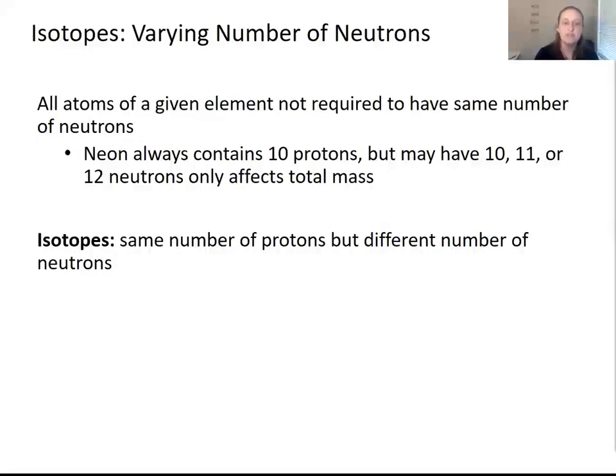Isotopes result when the number of neutrons varies. If the number of protons changes, we have a totally different atom. If the number of electrons changes, it forms a charged particle or an ion. If the number of neutrons changes, the only difference is the mass of the atom. For example, neon always has 10 protons, otherwise it's not neon, but it can have 10, 11 or 12 neutrons.